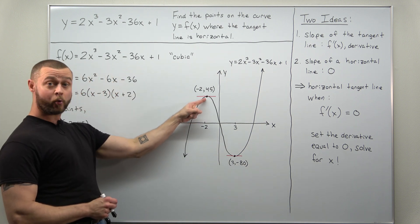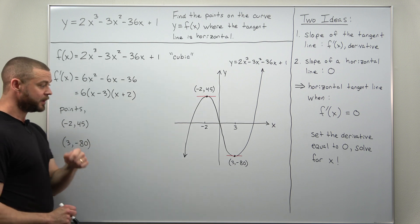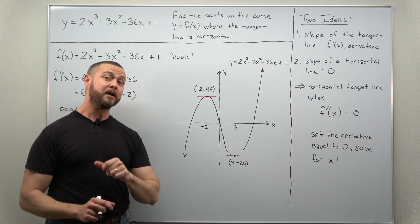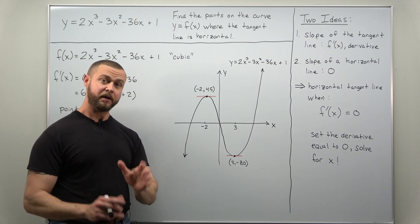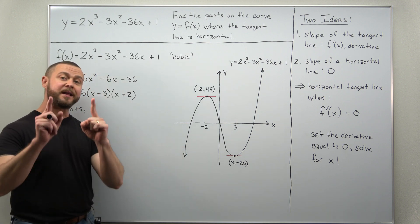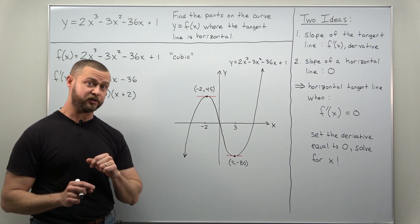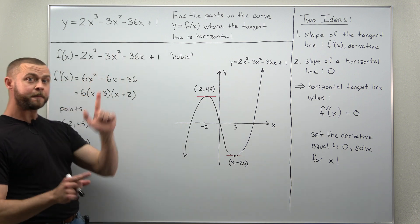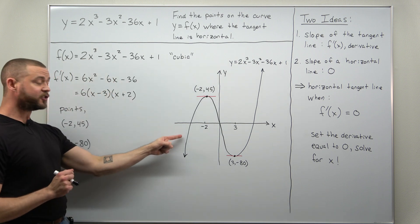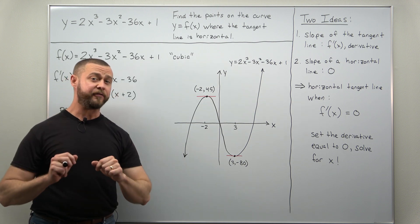you'll find that you have a horizontal tangent line at the point negative two comma 45. And there is another horizontal tangent line at the point 3 comma negative 80. Now, right now, sketching this graph by hand would be very difficult. But again, that is a goal you'll be working towards later in your calculus one course. Using only the equation here and a combination of first and second derivative, you'll be able to sketch that graph without any help without a graphing calculator or any graphing tool at all.